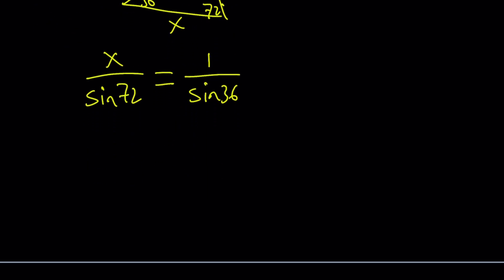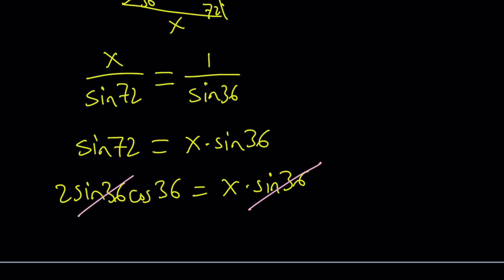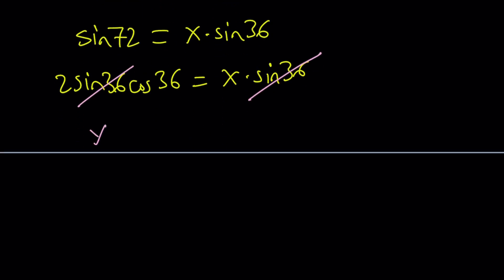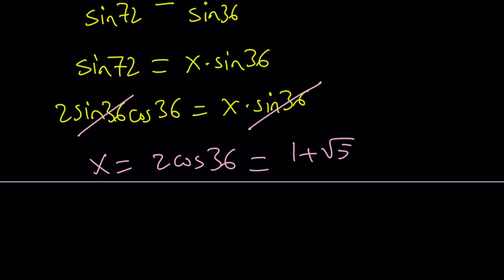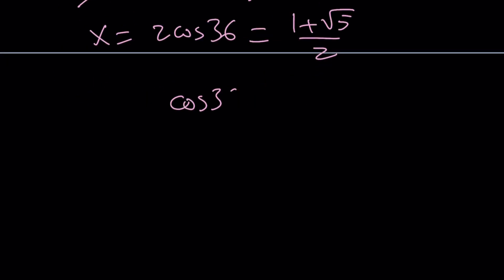From here we get, by cross multiplication, we get sine 72 equals X times sine 36. From double angle formula, sine 72 can be written as 2 sine 36 cosine 36. And then from here, since sine 36 is not 0, we can go ahead and cancel that out. And this gives us the value of X, which is 2 cosine 36. But, we do know the value of X. X is equal to 1 plus root 5 over 2. So, set that equal to 1 plus root 5 over 2. And this gives you the value of cosine 36 as root 5 plus 1 over 4.